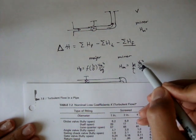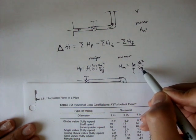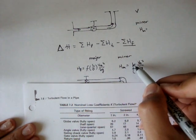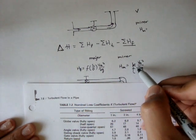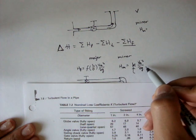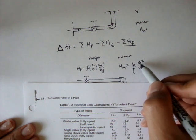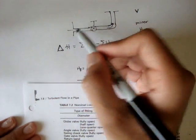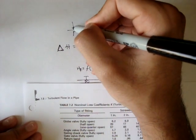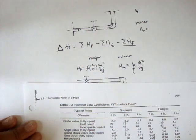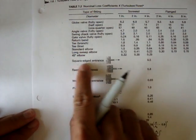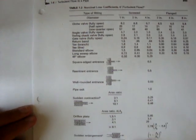Now, since VA squared over 2G remains constant, we can just sum up all the K values and multiply it by the VA squared over 2G. Remember, VA is just the average velocity, and in this case, it's just V. So, we had an entrance loss, and it looks like it's just a square-edged entrance. On my chart here, I see that the square-edged entrance has a K value of 0.5.